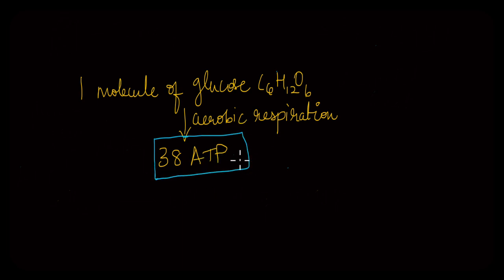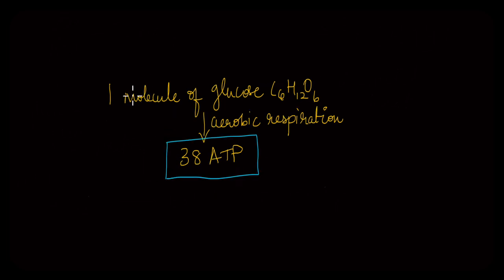Now this is just an ideal number. The actual number of ATP molecules produced from one molecule of glucose is actually less than this. Now this is just from one molecule of glucose. Say you take a slice of bread. Just imagine how many molecules of glucose would be there in that bread. It would be too many, right?